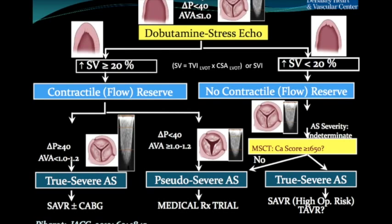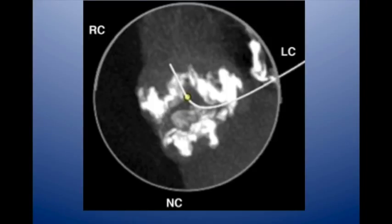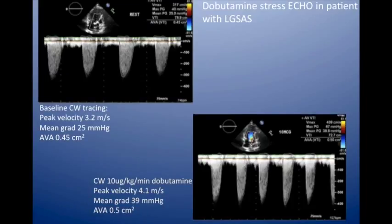This shows extensive calcification on multi-slice CT — that amount of calcification usually means at least some degree of aortic stenosis. Dobutamine stress echo is also helpful. This shows a patient with true severe aortic stenosis but low flow, low gradient. In the top left panel, the gradient is reduced but the area is quite low. After dobutamine stress with 10 mcg, on the right bottom panel, the gradient goes up but the area stays low — that's true severe AS with low ejection fraction and low flow.